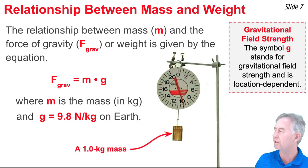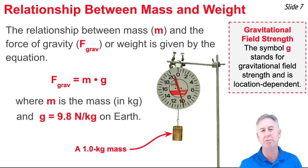So as you see here in this photo, if we took a 1 kilogram object and placed it on a spring scale, that spring scale would measure the weight of the object to be 9.8 newtons. The force of gravity, or weight, is equal to mass times 9.8 newtons per kilogram.